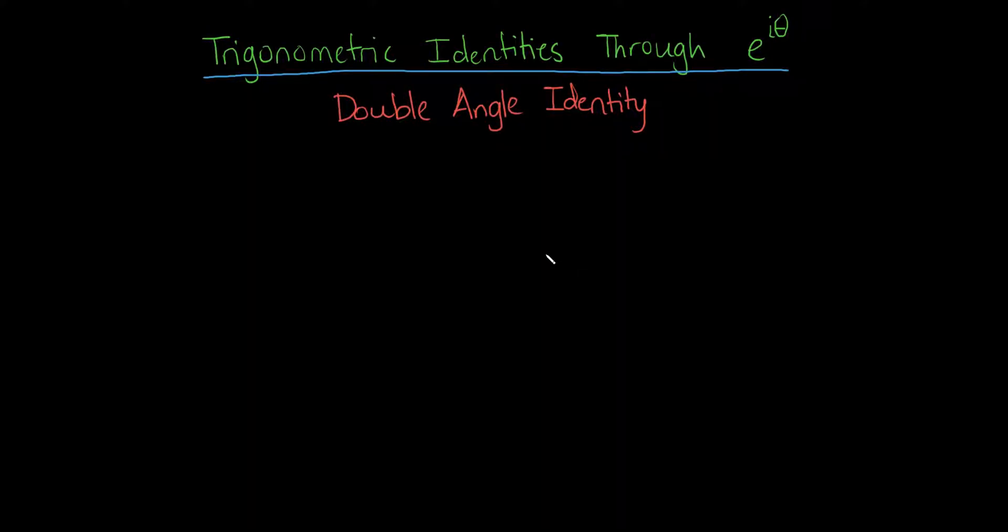The trigonometric identities are a really confusing point for some students in a trigonometry class. They seem to come out of thin air. They're really hard to remember.